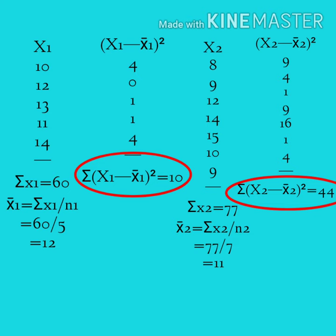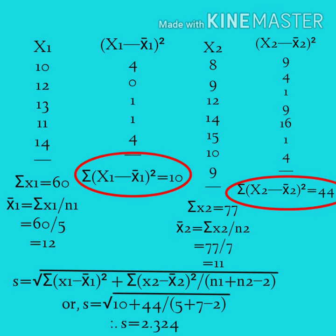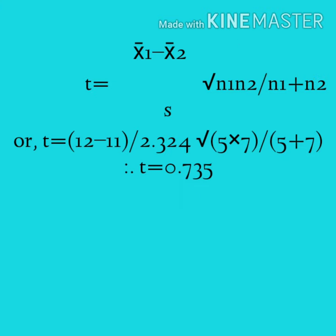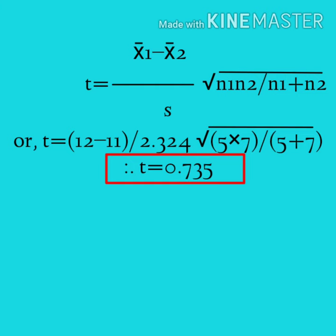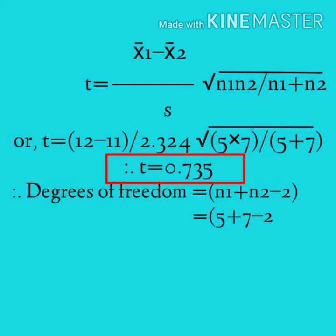Putting Σ(x₁−x̄₁)² = 10, Σ(x₂−x̄₂)² = 44, n₁ = 5, and n₂ = 7 into the formula for s gives s = 2.324. Substituting x̄₁ = 12, x̄₂ = 11, s = 2.324, n₁ = 5, n₂ = 7 into the t formula gives t = 0.735. The degrees of freedom = n₁ + n₂ − 2 = 5 + 7 − 2 = 10.